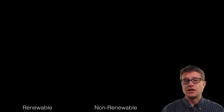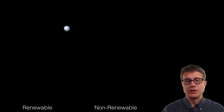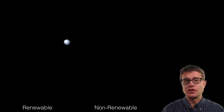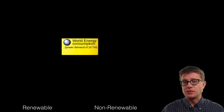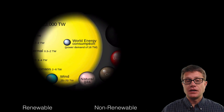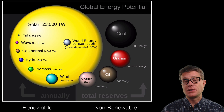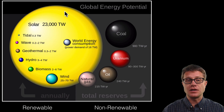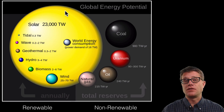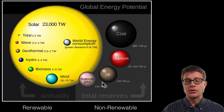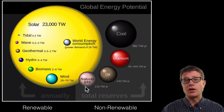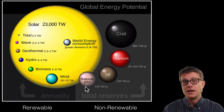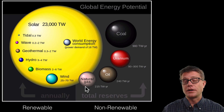Let's look at the size difference between renewable and non-renewable. If this sphere represents the amount of energy that we consume on our planet every year — 16 terawatts — then each of these other spheres represents the potential energy we can find in both non-renewable and renewable resources. The one that dwarfs everything else is the sun. We also have a lot of energy in coal, uranium, oil, and natural gas, but the problem with all of these is that they are non-renewable and we will run out of them.